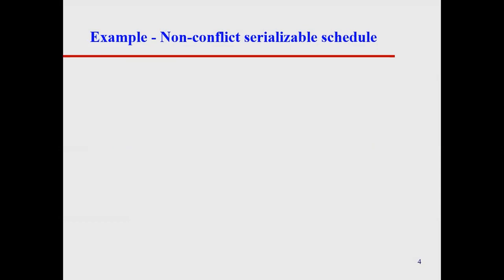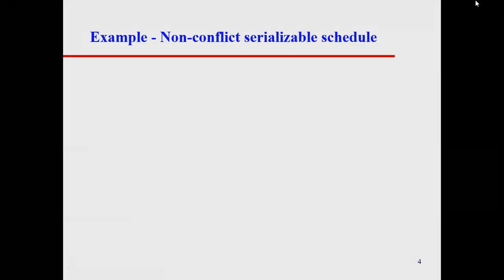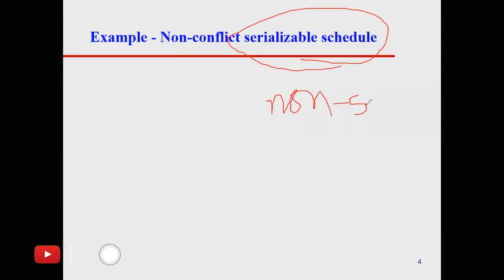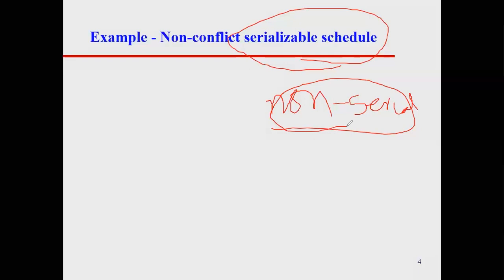So for example the first one — a non-conflict serializable schedule. We also discussed a little bit about what a serializable schedule is. So first we need to know what a serializable schedule is. It is a non-serial schedule which does not have a conflict — a non-serial schedule which can be made serial.